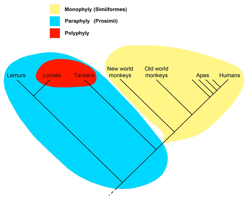The arrangement of the members of a polyphyletic group is called a polyphyly. Alternatively, polyphyletic is simply used to describe a group whose members come from multiple ancestral sources, regardless of similarity of characteristics.